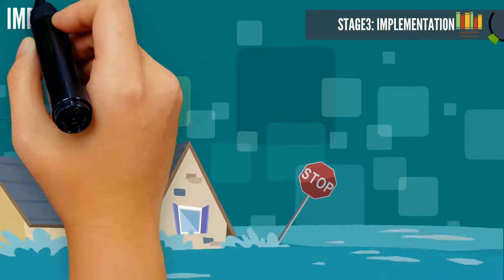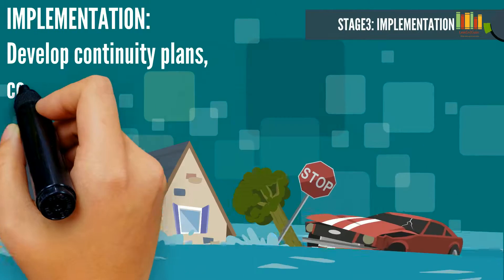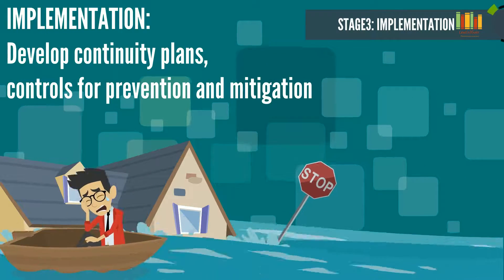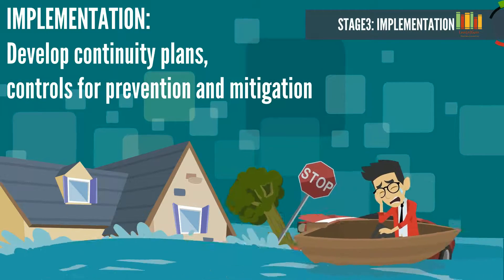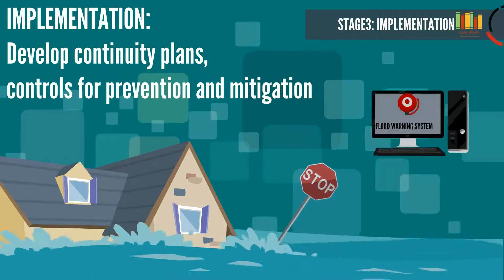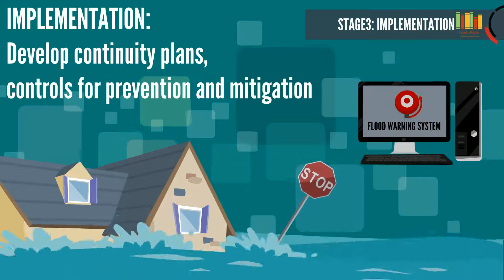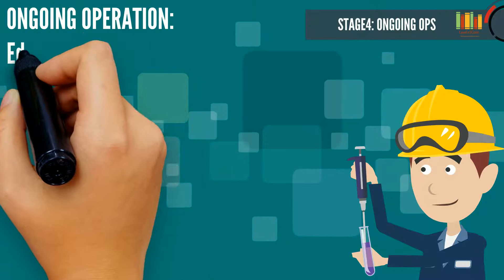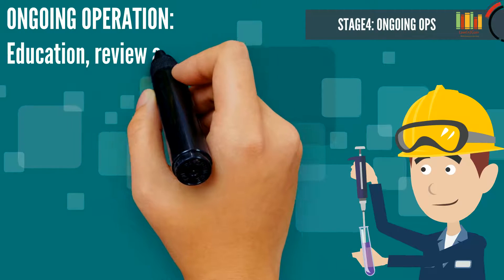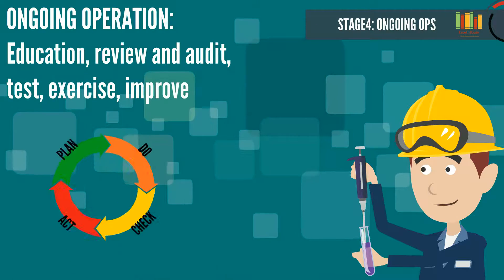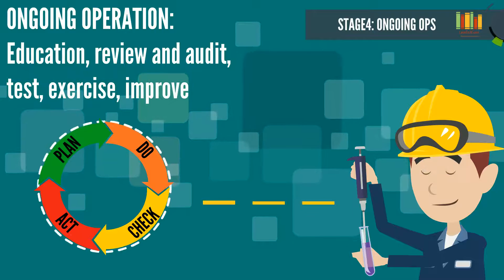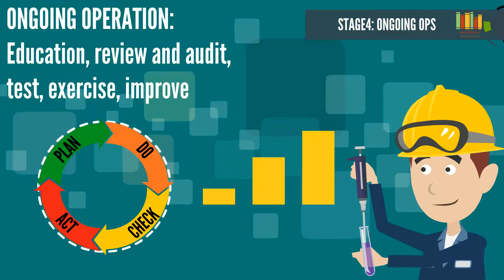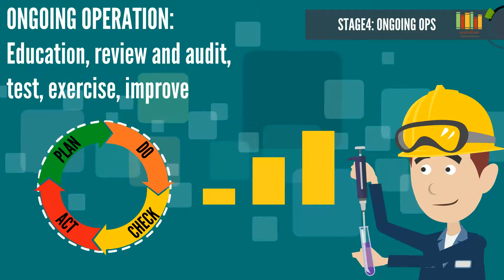Stage 3 is Implementation, which talks about developing continuity plans, recovery plans, and prevention and mitigation measures. Stage 4 is Ongoing Operation, which covers education, awareness and training, reviewing and auditing procedures, and testing, exercising, and improving your plan regularly.